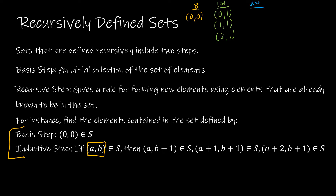Now applying the recursive step to each of those new elements. From (0,1): we get (0,2), (1,2), and (2,2). From (1,1): (1,2) already have it, (2,2) already have it, and (3,2). From (2,1): (2,2) already have it, (3,2) already have it, and (4,2). So for second value of 2, the first values we have are 0, 1, 2, 3, and 4.